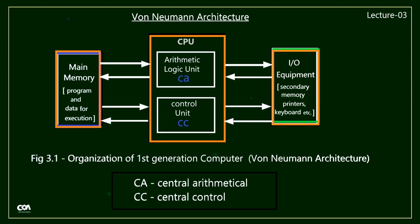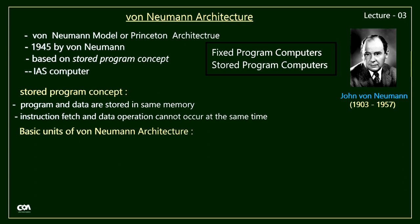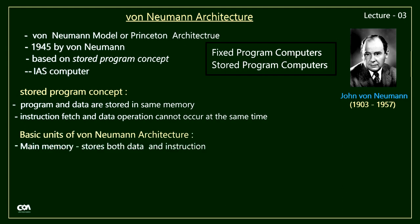Let's see the structure of Von Neumann architecture — you may pause the video and draw the architecture. The Von Neumann architecture has three main components: a CPU, a main memory, and input/output equipment. The main memory stores both the instructions as well as data — at one time it stores only the instruction, and at another time it stores the data.